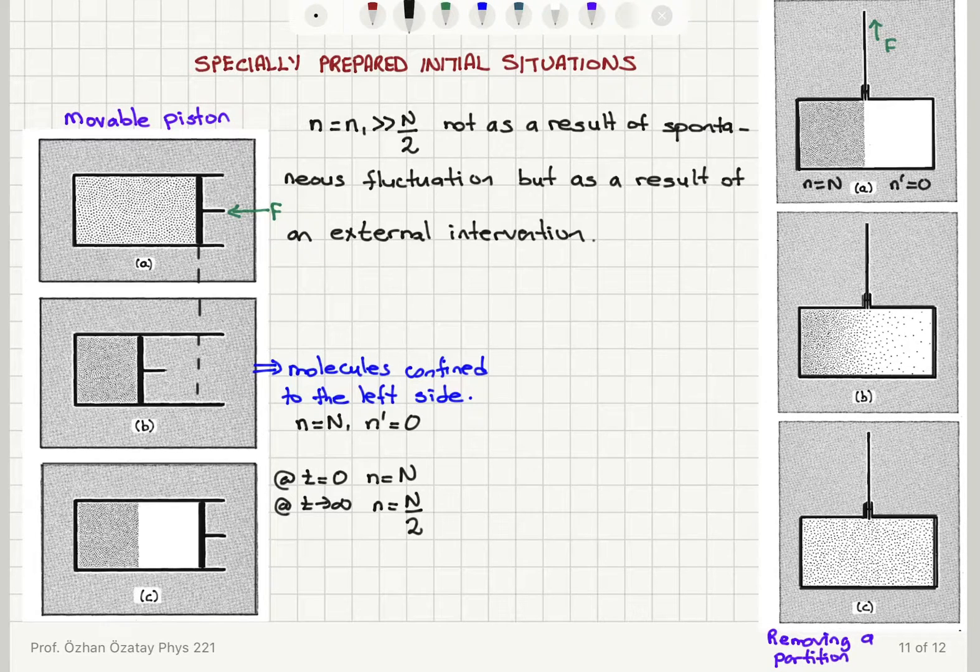And what will start happening is that these molecules will start diffusing to the right-hand side. And eventually, so this is t equals 0 configuration, this is t intermediate, and as time goes to infinity, I will relax to the most uniform and random configuration. So that n will assume its time-averaged value capital N over 2, n prime will be capital N over 2. So I can prepare an ordered configuration using an external intervention. But as soon as this restriction on the system is removed, the system will relax to its most uniform or random configuration.